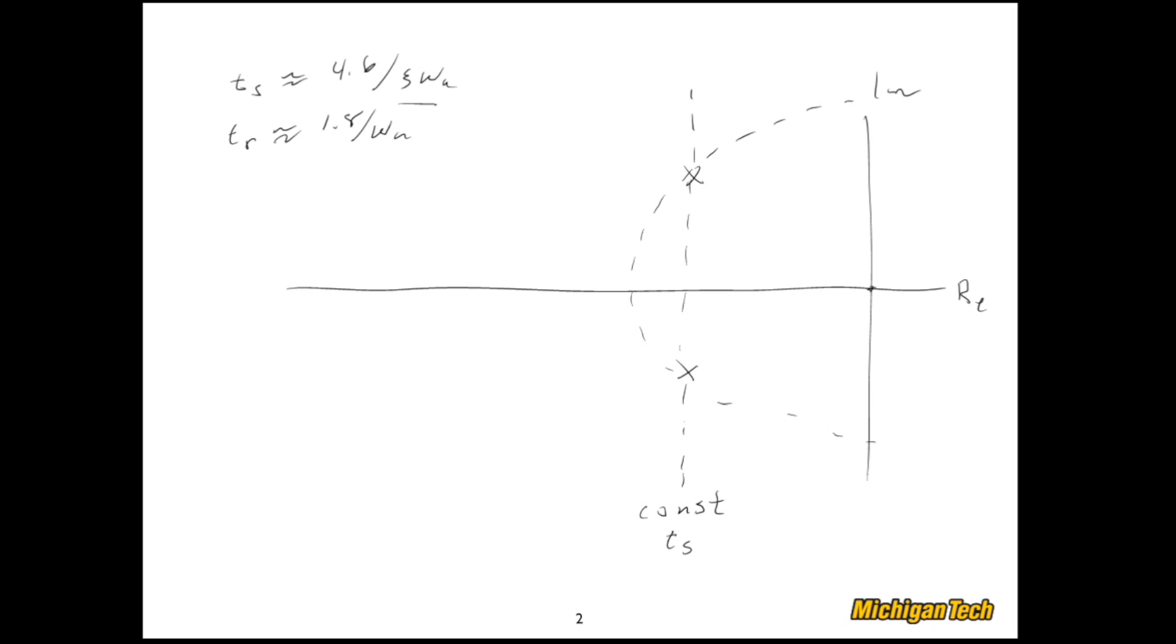So what this is saying is that if I were to swing an arc, a semicircle like so—that's a semicircle believe it or not—if I were to move the poles along that semicircle I would maintain the same rise time. So that arc is a constant Tr arc.